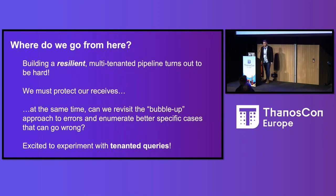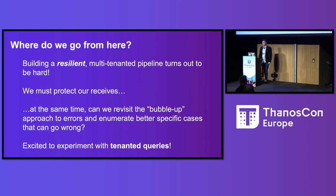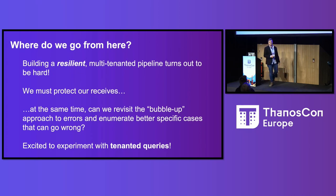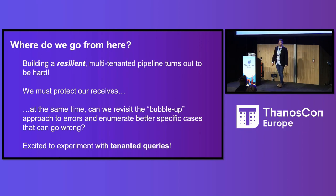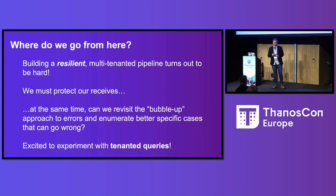The main takeaway is that building a resilient multi-tenanted pipeline is quite hard. I was confident back in November — I'm not so confident anymore. There's a lot to learn, and that's a good thing: we learn from incidents. We can do our best to protect the receives — the receives must be protected. It would be interesting to revisit the bubble-up approach for errors: how receives determine which error to return when replication is enabled. And it would be exciting to experiment with the new tenanted queries to protect ourselves better.